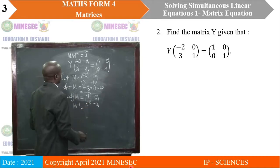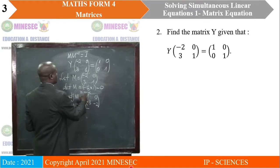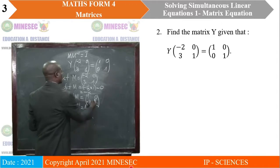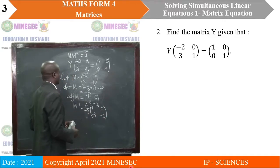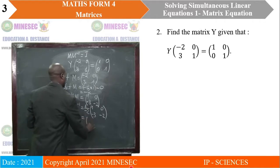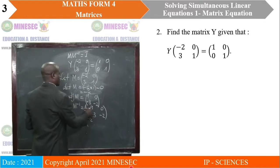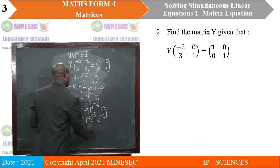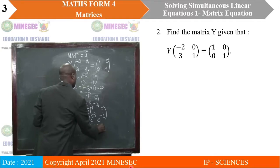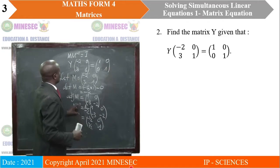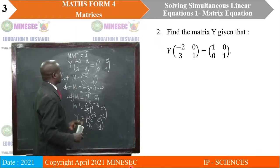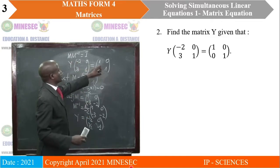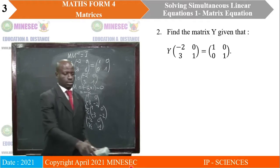M inverse is calculated as 1 divided by the determinant, which was negative 2, into the adjoint [1, 0; -3, -2]. We can multiply each entry by negative half, giving us [-1/2, 0; 3/2, 1]. So that will be our M inverse. This M inverse is going to be Y. Effectively, this is the matrix Y we are looking for. If we take this matrix and multiply by the original, it will give us the identity matrix.